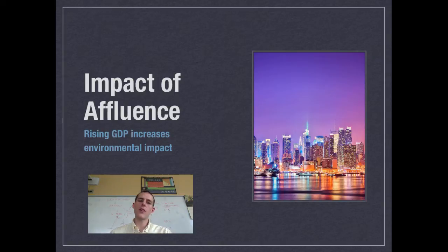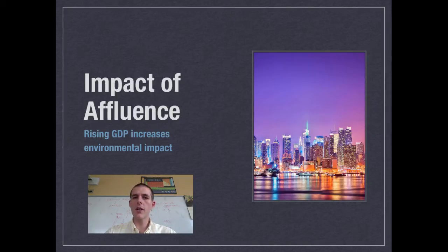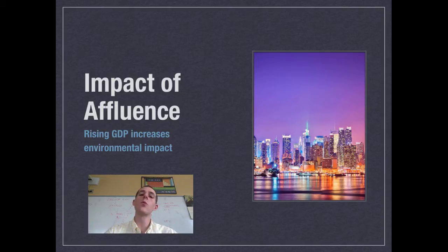To finish up: the impact of affluence. People in countries with more affluence — more wealth — have a greater environmental impact. Countries with a bigger GDP will have a bigger environmental impact than countries with a smaller GDP, because people in those countries have more power to buy things, more access to goods and services. So just by virtue of where they live, they're going to consume more things.